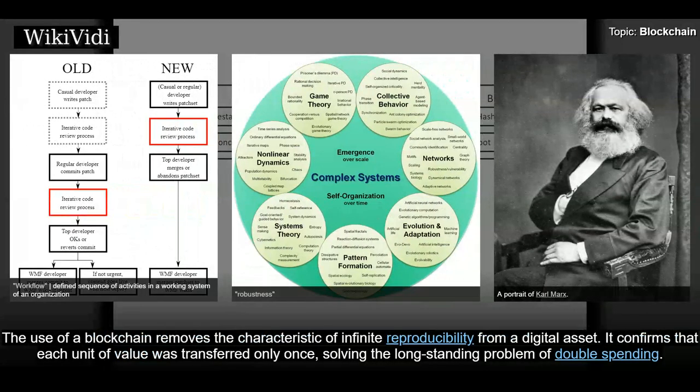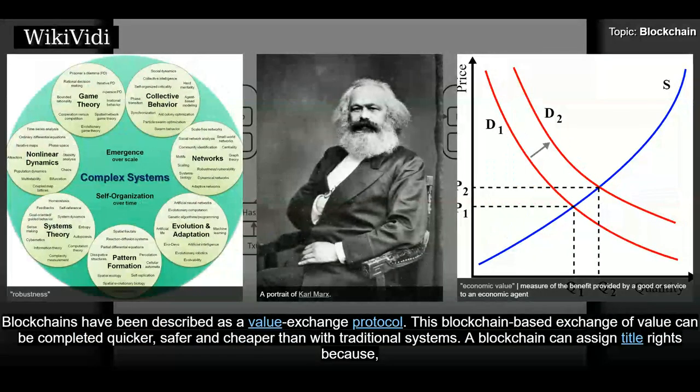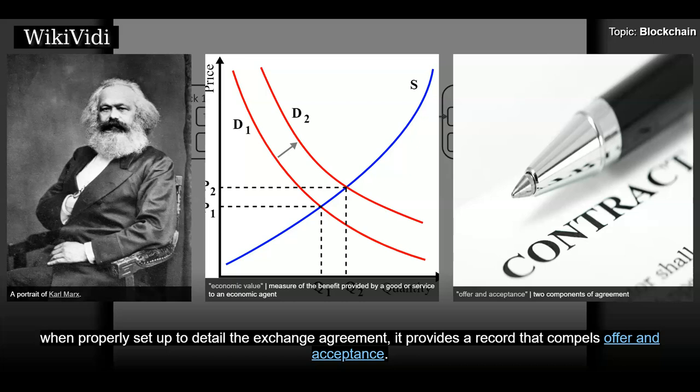The use of a blockchain removes the characteristic of infinite reproducibility from a digital asset. It confirms that each unit of value was transferred only once, solving the long-standing problem of double spending. Blockchains have been described as a value exchange protocol. This blockchain-based exchange of value can be completed quicker, safer and cheaper than with traditional systems. A blockchain can assign title rights because, when properly set up to detail the exchange agreement, it provides a record that compels offer and acceptance.